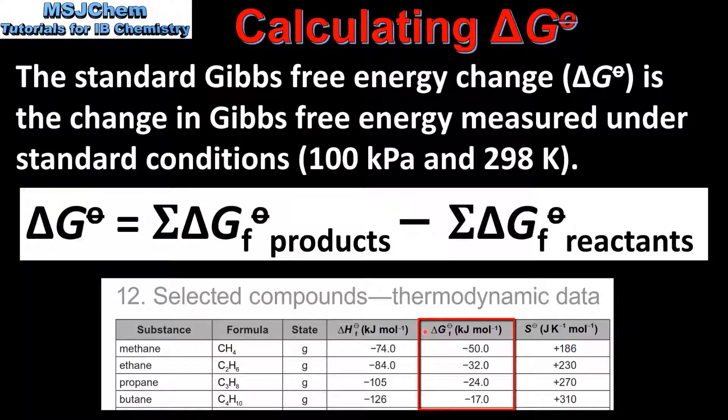Standard Gibbs free energy of formation values for a variety of compounds can be found in table 12 of the IB data booklet.